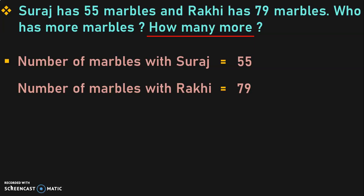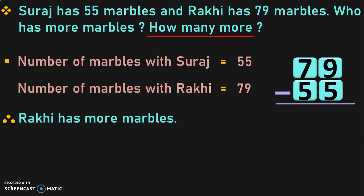Who has more marbles? We have two two-digit numbers for comparison. When comparing two two-digit numbers, we look at the tens place. In the tens place, we have 5 and 7. We know that 7 is greater than 5, so we can conclude that 79 is greater than 55, which means Raki has more marbles. The next question is: how many more? To find the answer, we subtract the number of marbles with Raki minus the number of marbles with Suraj — that is 79 minus 55.